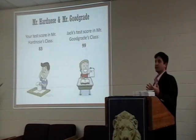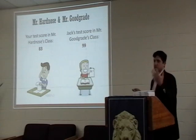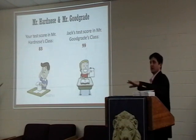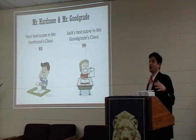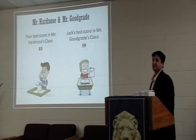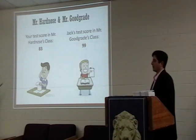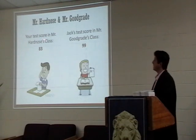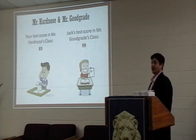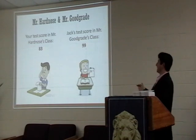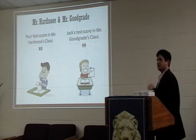One of the examples I give in the book: imagine you're in Mr. Hardnose's chemistry class — a really hard grader. Your rival is in Mr. Goodgrade's class — he basically gives everybody an A just for showing up. What I'm going to demonstrate is that your 83 in Mr. Hardnose's class can actually be more impressive than Jack's 99 in Mr. Goodgrade's class. Everybody knows 99 is greater than 83 — but how could that be?